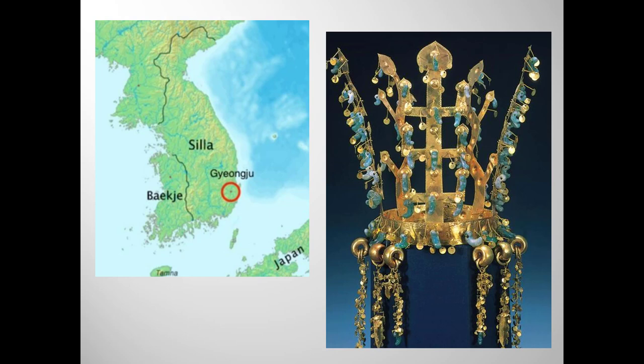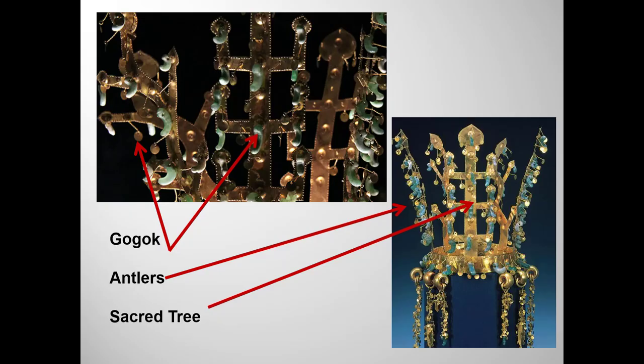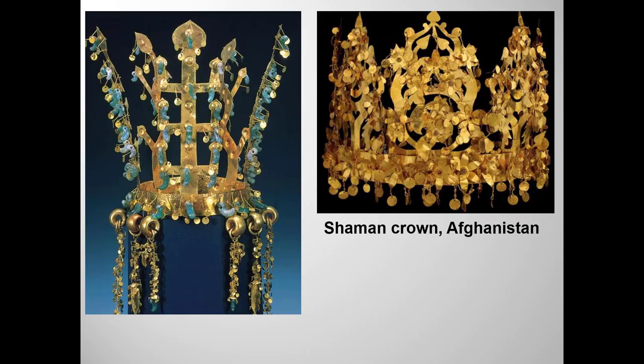Where have we encountered the axis mundi before? Here are a couple of examples: the yasti on top of the stupa at Sanchi and the garbagriha at the Lakshmana temple. Two additional antler-shaped protrusions may refer to reindeer native to the Eurasian steppe north of the Korean peninsula. Those dangling gold discs and jade ornaments called gagok symbolize ripe fruits hanging from branches — that is, fertility and abundance. The Khan Academy essay also included a photo of another Central Asian crown, this one found at a nomad grave site in Afghanistan, showing further evidence of cultural sharing or borrowing.